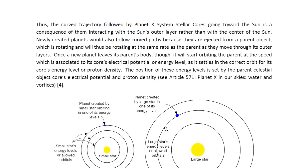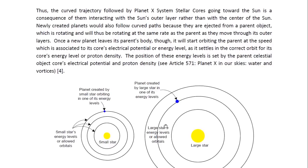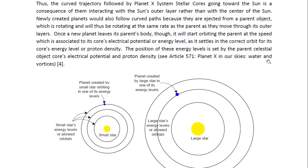Thus, the curved trajectory followed by Planet X system stellar cores going toward the Sun is a consequence of them interacting with the Sun's outer layer, rather than with the center of the Sun. Newly created planets would also follow curved paths because they are ejected from a parent object which is rotating and will thus be rotating at the same rate as the parent as they move through its outer layers. Once a new planet leaves its parent's body, it will start orbiting the parent at the speed which is associated to its core's electrical potential or energy level, as it settles in the correct orbit for its core's energy level or proton density. The position of these energy levels is set by the parent celestial object core's electrical potential and proton density. See Article 571, Planet X in our Skies, Water and Vortices.